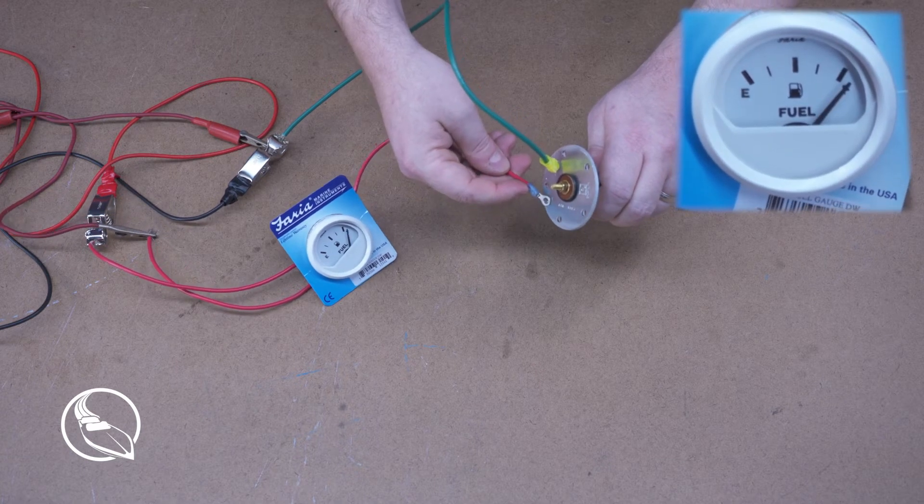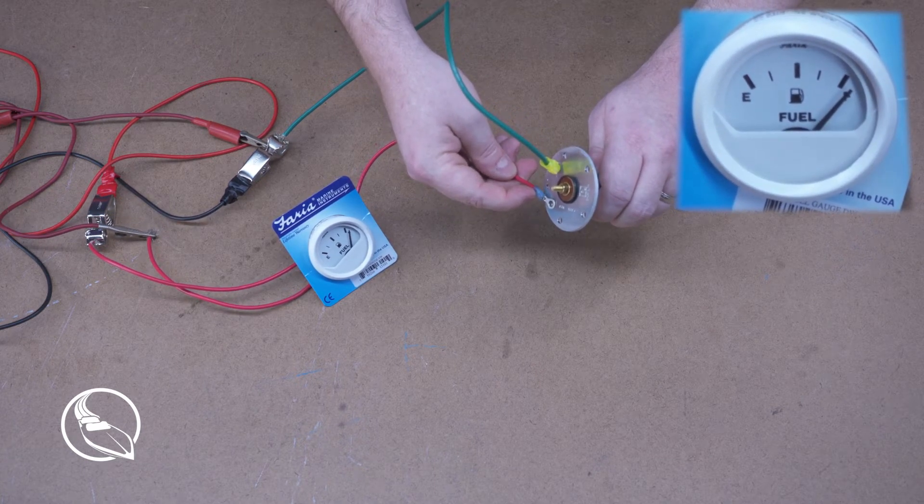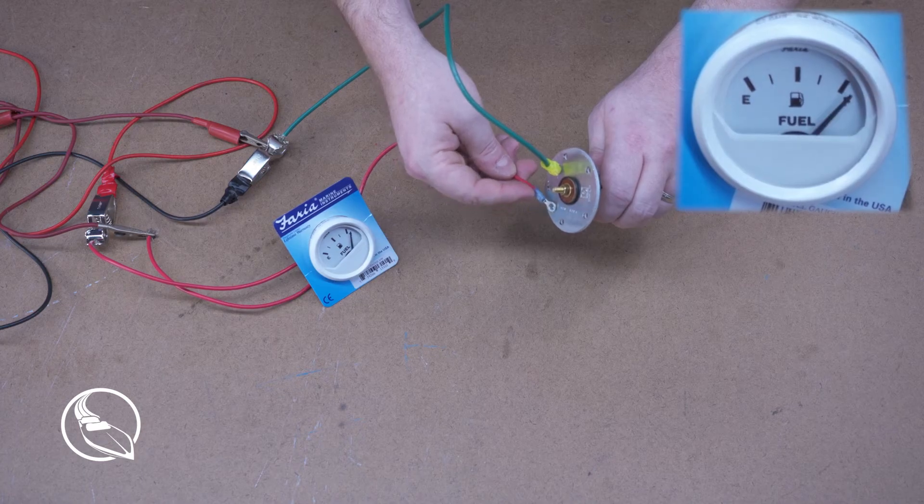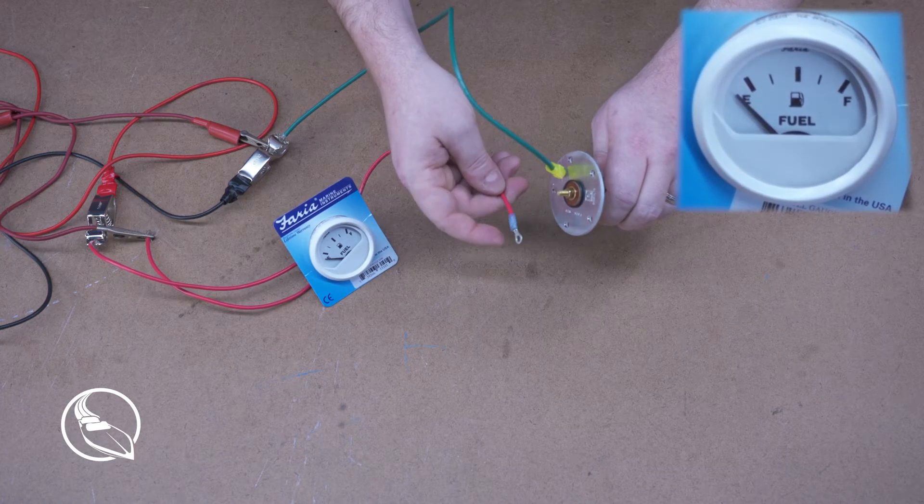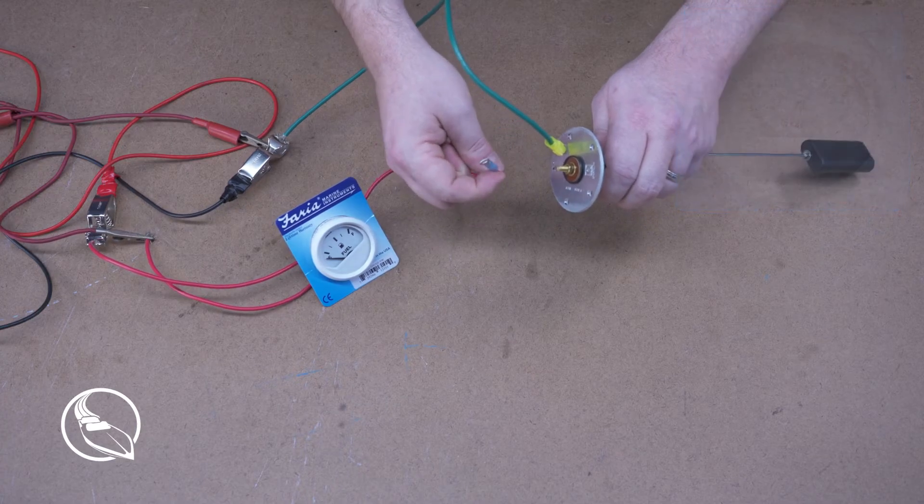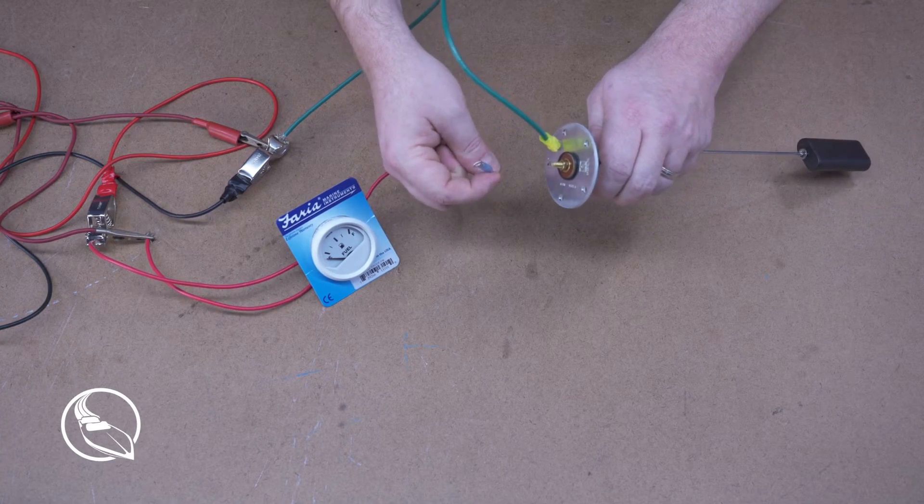And we can see that the needle does move when I touch it to ground. So now we know that the sender wire or the signal wire is working properly.